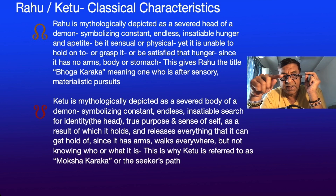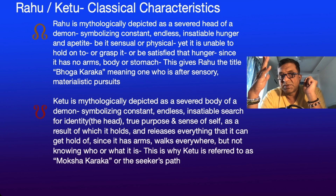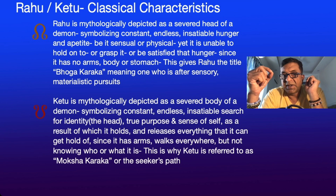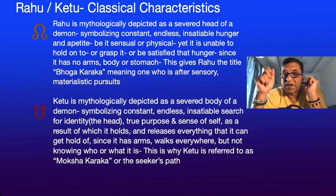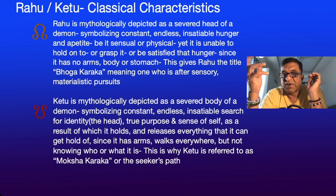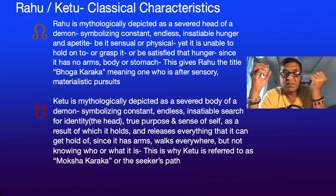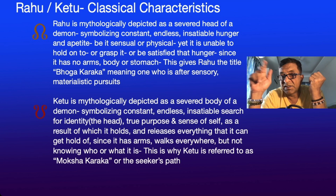Rahu is mythologically depicted as the severed head of a demon, symbolizing constant, endless, insatiable hunger and appetite — be it sensual or physical — yet unable to hold on to or grasp anything. Think of it as a live head only, with no body. It can't be satisfied even if it gets something, since it has no arms, body, or stomach. This gives Rahu the title of Bhogakaraka — meaning one who is after sensory, materialistic pursuits.